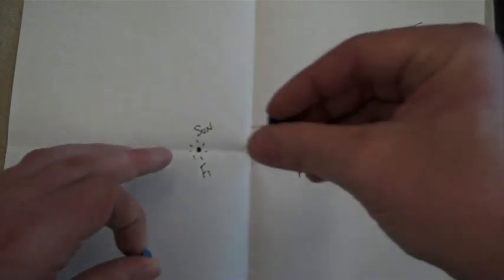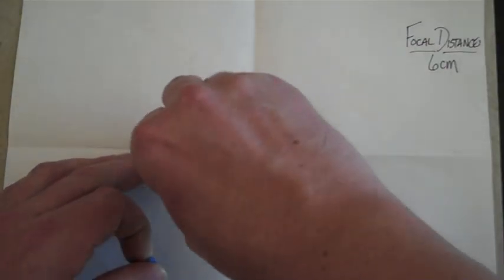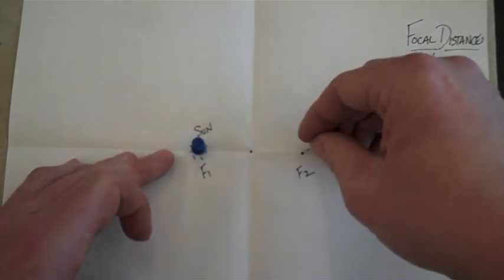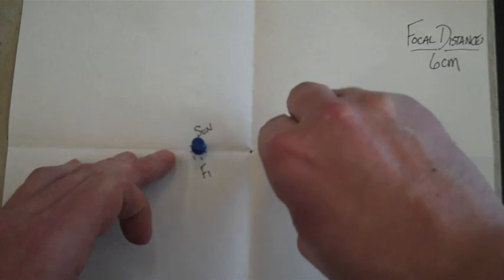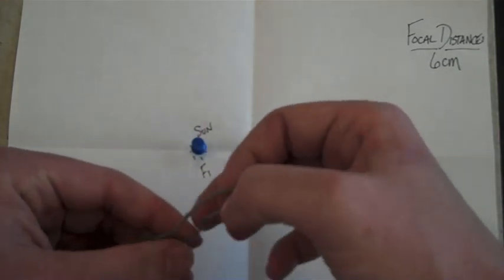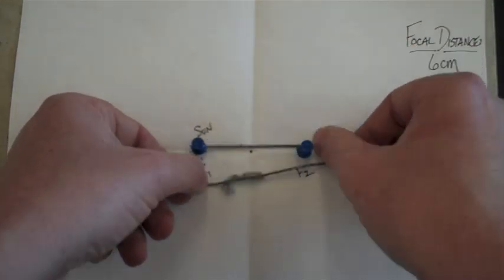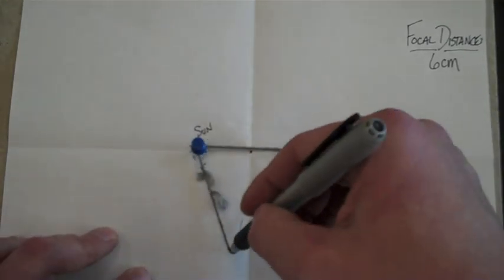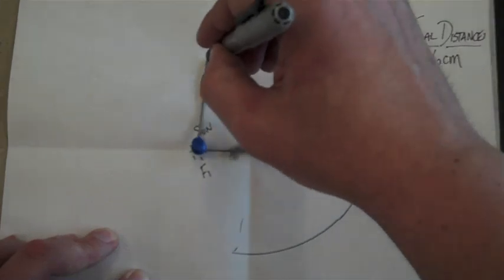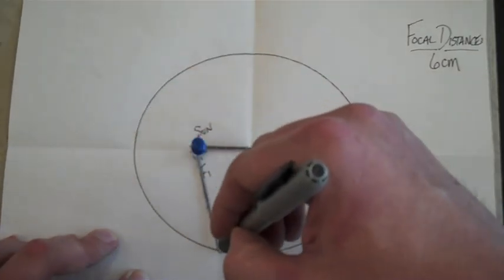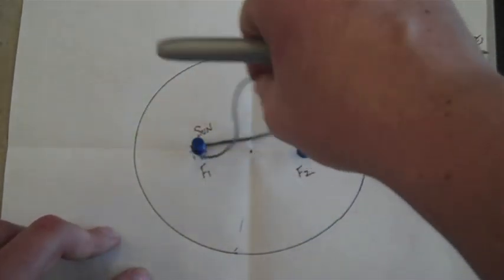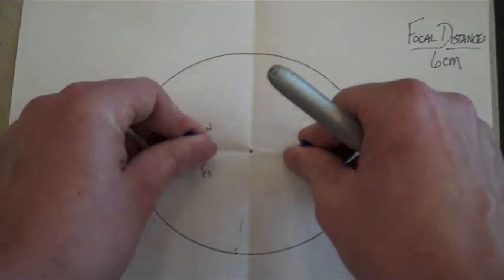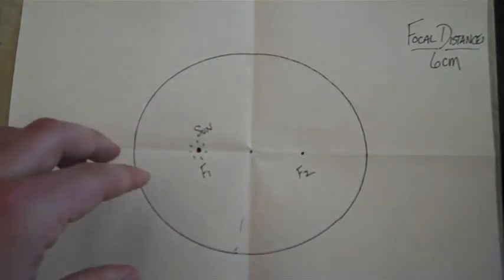Take your pushpins. Put a pushpin into F1. Put a pushpin into F2. Put your string around the tacks and go ahead and draw. It comes out pretty well. Take your string off. Let's figure out the eccentricity to this one.